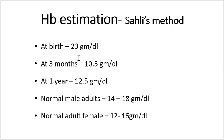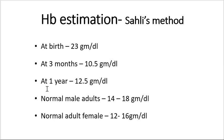The normal hemoglobin values: at birth it's around 23 gram per deciliter; at three months it comes down to 10.5 gram per deciliter — a sudden fall. This occurs because till six months the baby is on breastfeed, which doesn't contain iron, so hemoglobin synthesis decreases. After that, at one year it increases to 12.5 gram per deciliter because weaning started at six months.